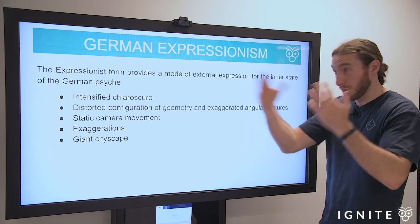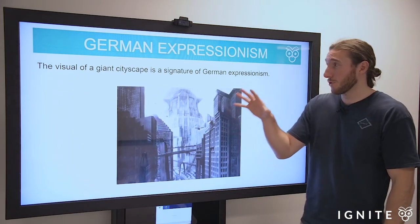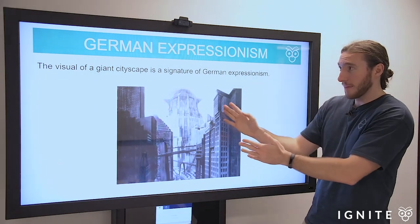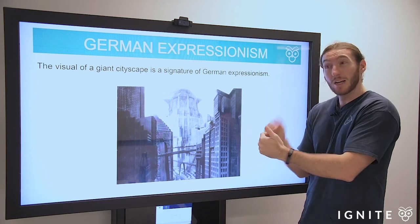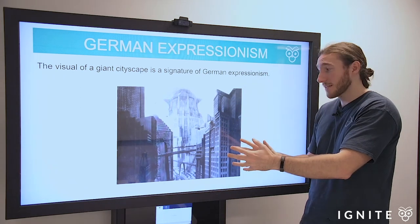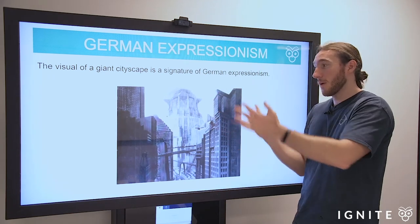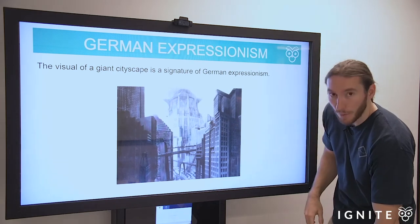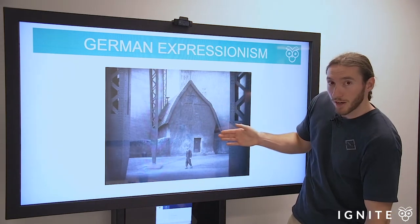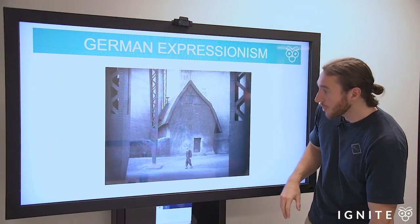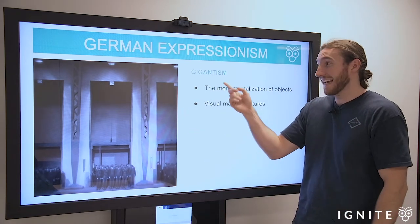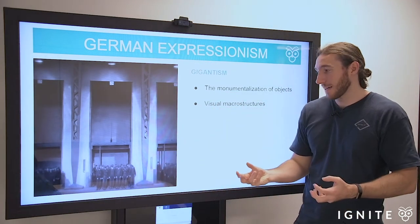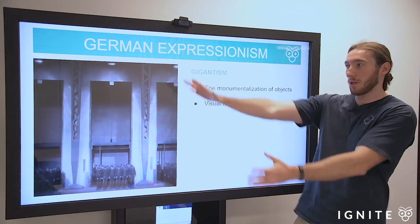Just to take you quickly through some examples of these different elements: there's the giant cityscape — a signature of German expressionism. But remember, that's based largely on Lang's experience in New York. He actually went to New York just before making the film and a lot of the images were inspired by that experience. He saw that it looks so grand and progressive, but underneath we have the working class — what is actually fueling that progress and modernity? And he really makes a comment on that. We talked about the example of visual macro structures to highlight the insignificance of the individual — we'll call that gigantism — where the macro structures are so disproportionately large that the workers here are made to look so insignificant and powerless. That's what he's trying to get at, using the symbolic value of expressionism.